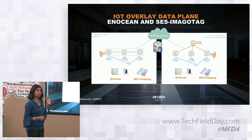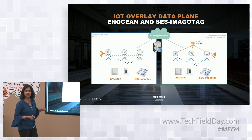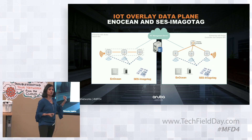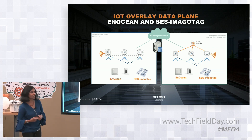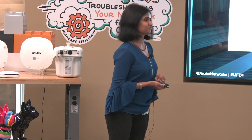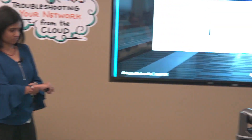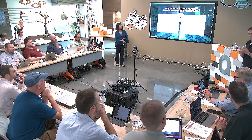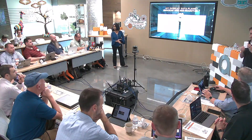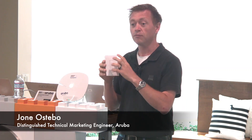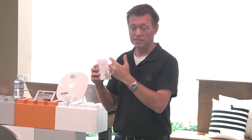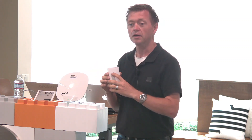Jona will demonstrate some of these use cases. We have time for a couple. One of them will be the energy-harvesting solutions from EnOcean — light switches and electronic shelf labels. The first demo is with EnOcean switches, which have no battery. They use the mechanical force when you push the button to charge a small capacitor, which then sends a small beacon out over the air that we detect.